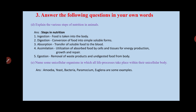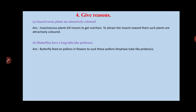The unicellular organisms are: Amoeba, yeast, bacteria, Paramecium, and Euglena — all are unicellular organisms in which life processes take place within their unicellular body. The fourth question asks us to give reasons. First: insectivorous plants are attractively colored because they depend on insects for their nutrition, so they need to attract insects.